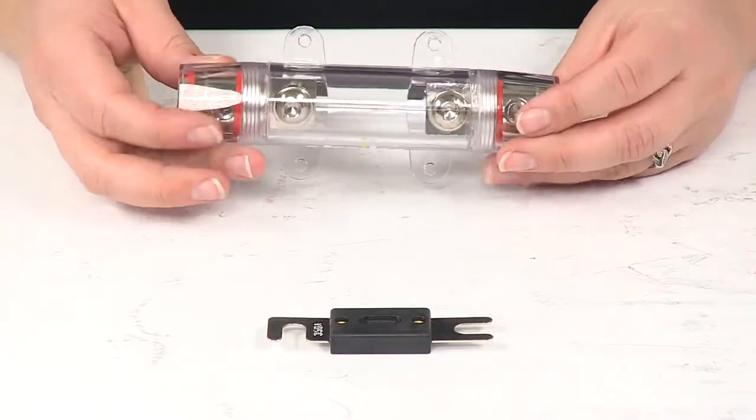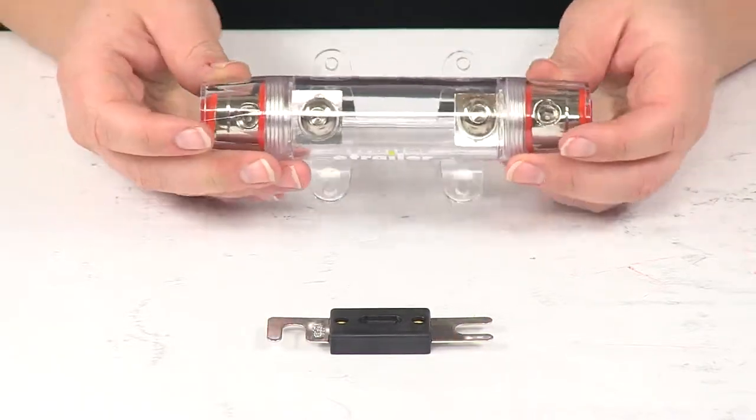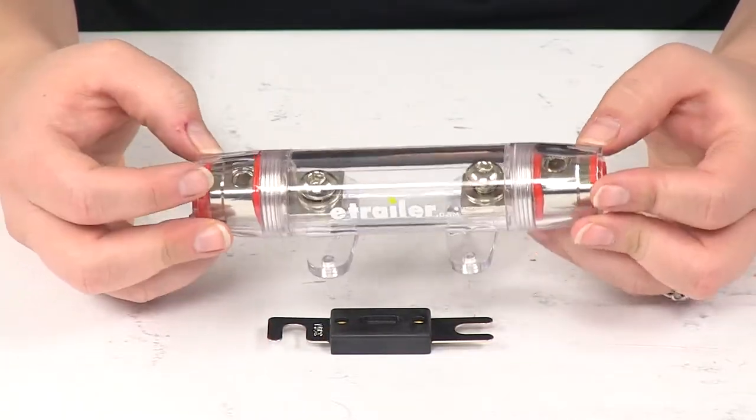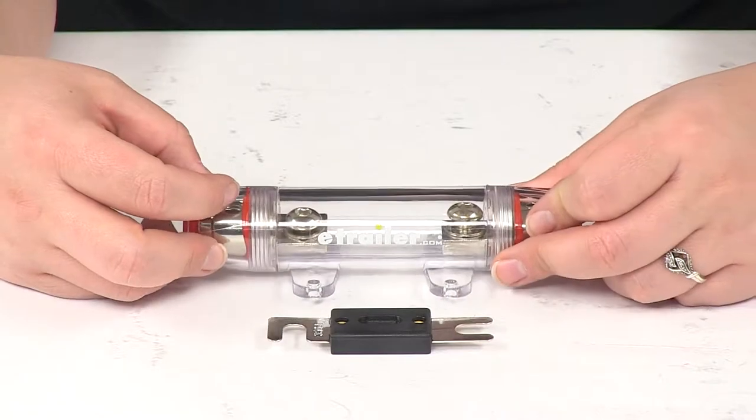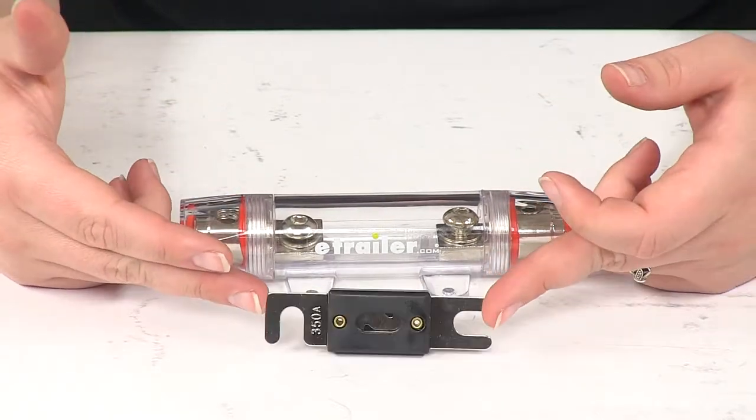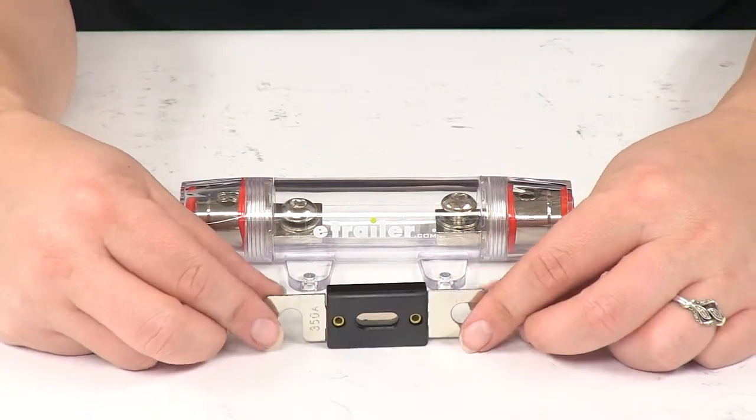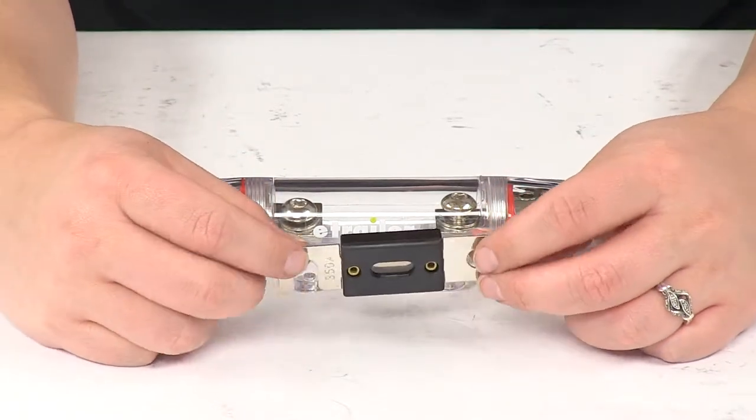This fuse holder allows you to have a great option for mounting up your fuse in your truck or jeep or wherever you have your off-road winch mounted. It's also going to come with that 350 amp fuse to get that connected and make sure that you have the power that you need and also the protection that you need.